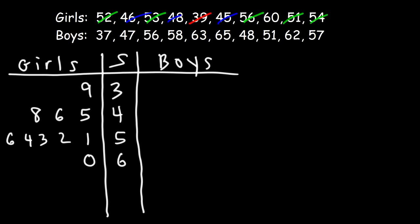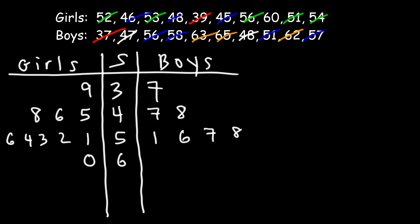Now let's move on to the boys. The lowest number for boys is 37. Then there are two numbers in the 40s: 47 and 48, so we write 7 and 8. In the 50s, we have 51, 56, 57, and 58, so we write 1, 6, 7, and 8. Finally, in the 60s, we have 62, 63, and 65, so we write 2, 3, and 5.